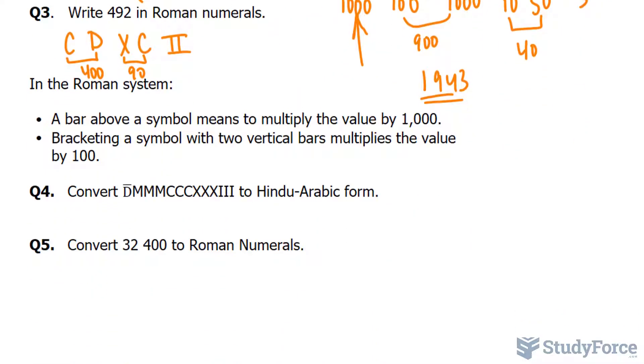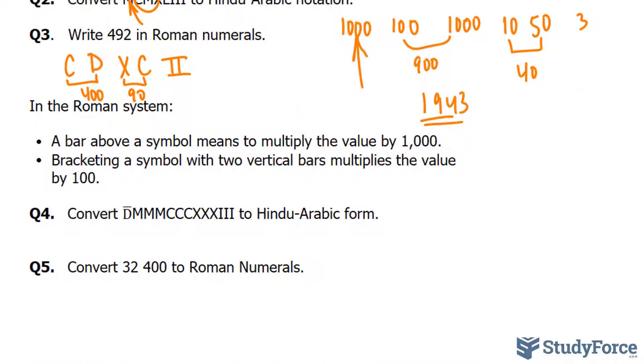One last thing before we conclude. In the Roman numeral system, a bar above a symbol means to multiply the value by 1,000. And bracketing a symbol with two vertical bars multiplies the value by 100.